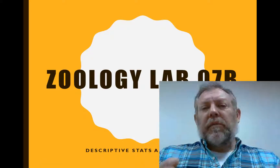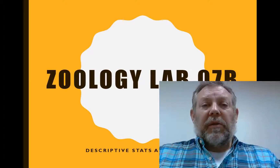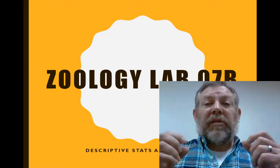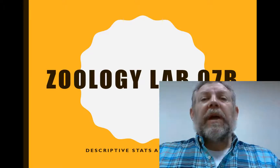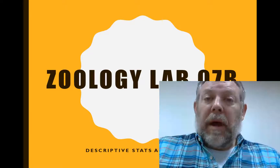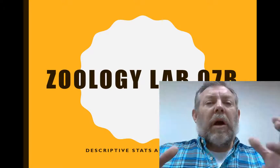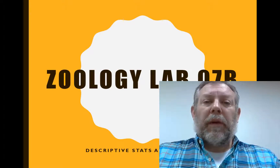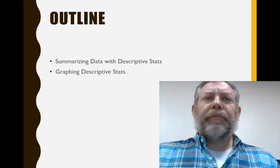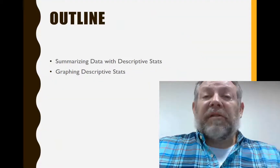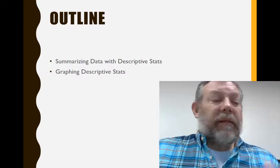Alright, so we collected some simple data in lab, and I want to show you how we're going to summarize those data, how we're going to calculate the descriptive stats, and then how we're going to take those descriptive stats and make figures. I want to show you step by step how we're going to do this, explain why we do this, and also show you how to do these figures properly so that in future labs you already know how to do them. We're going to talk about descriptive stats first, and then I'll show you how to calculate them and how to graph them.